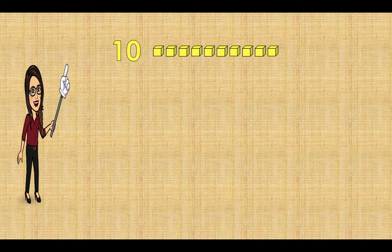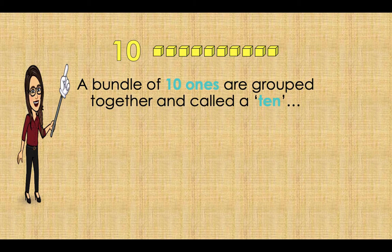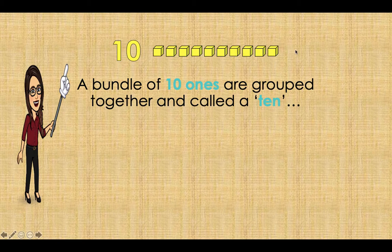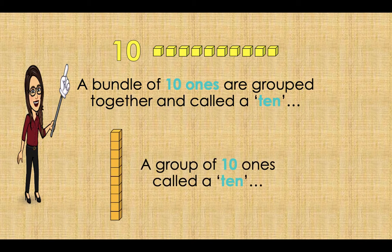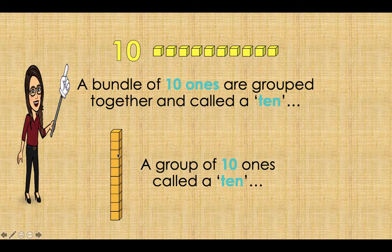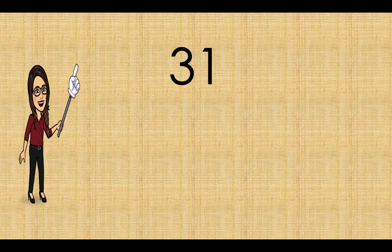For tens, you have ten cubes. The interesting part is these ten cubes are counted as one ten. A bundle of ten ones — one, two, three, four, five, six, seven, eight, nine, ten — are grouped together and called a ten. These are compactly arranged and we call them one ten. So one ten is actually a bundle of ten one-cubes.